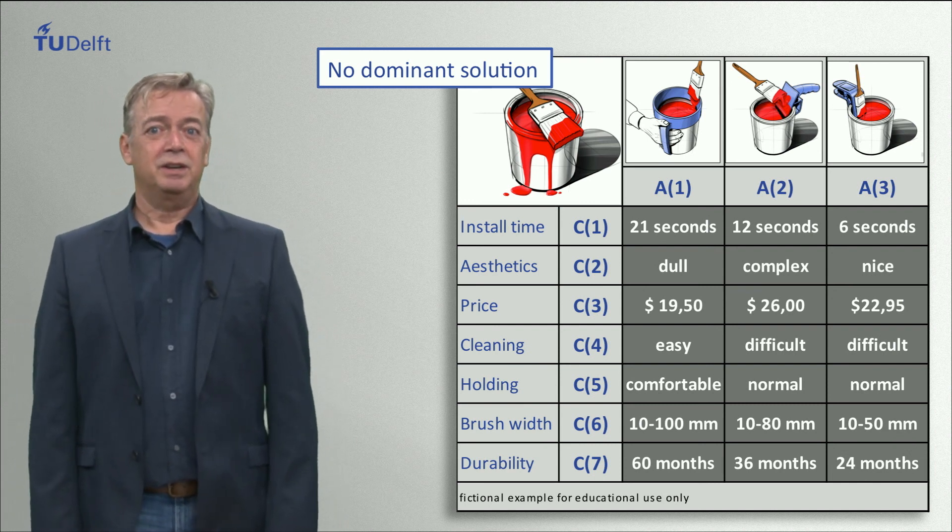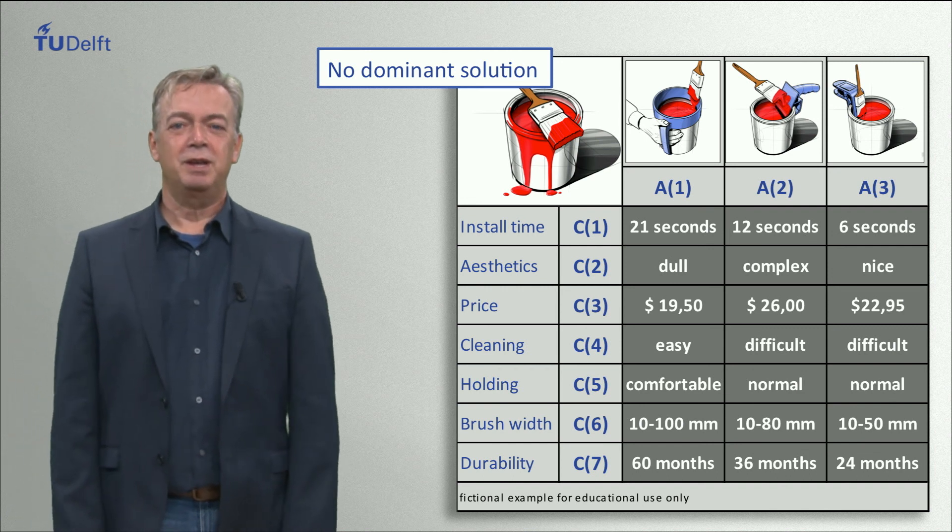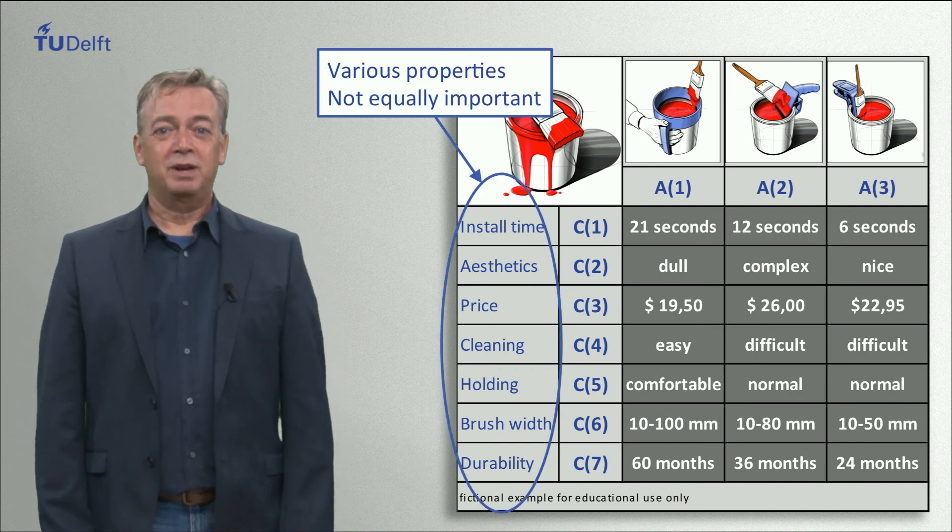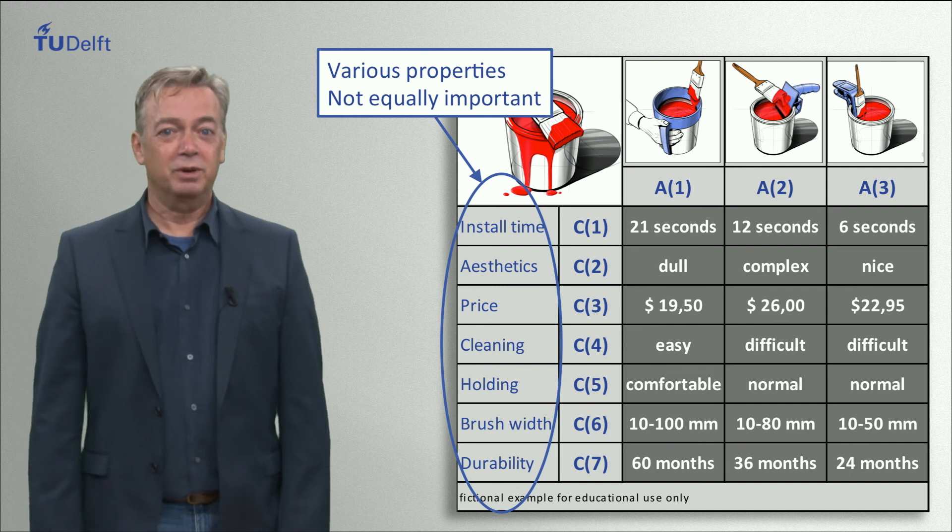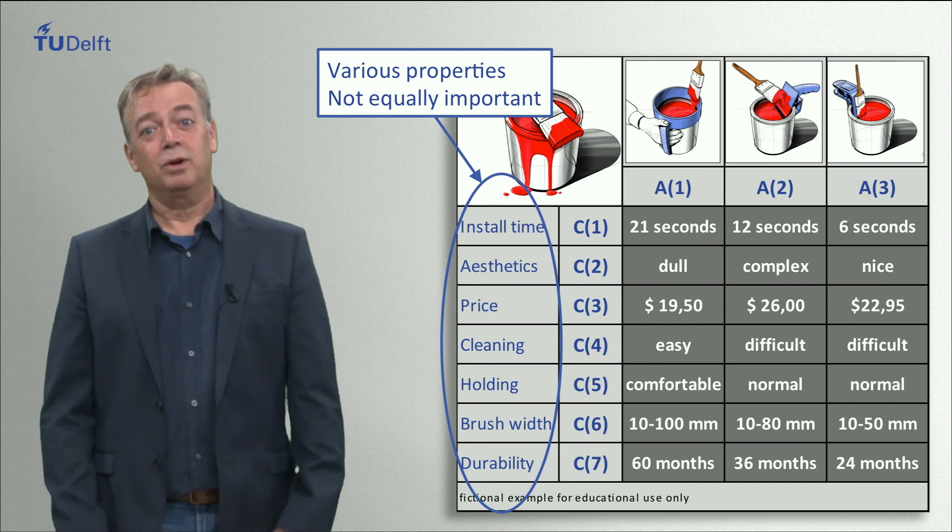The second is that usually there are various properties which are not equally important. For example cleaning might be considered more important than aesthetics, or the other way around.